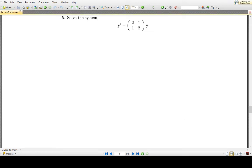Okay, here we have a system of first-order differential equations given by the matrix equation y prime is equal to [[2,1],[1,2]] times y. So what we're going to do is just take a brief second here to rewrite what this actually is.